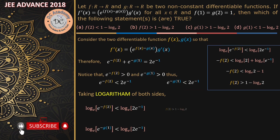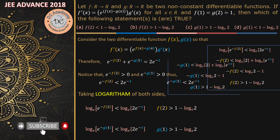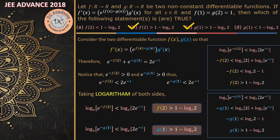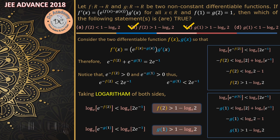Similarly, from e^(-g(1)) < 2e^(-1), applying logarithm gives g(1) > 1 - log(e) — following the same process. So we obtain bounds for both f(2) and g(1). Therefore options B and C are correct. This problem can be treated as a differential equation using separation of variables, or as an integration problem. Hope you understood — thank you.